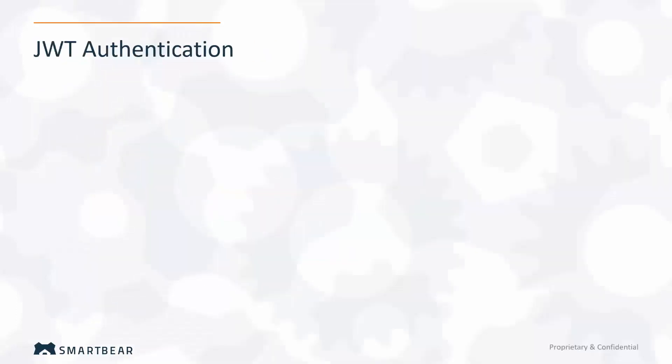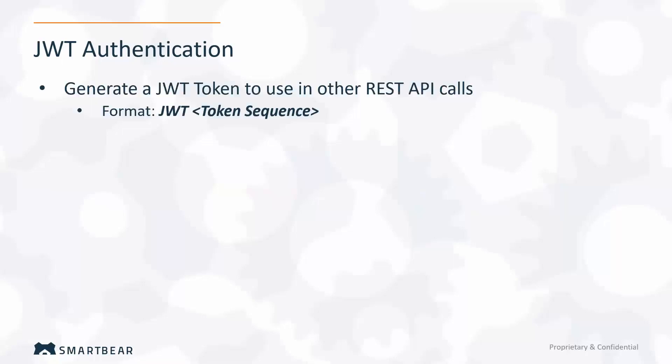The JWT authentication, which is the first step of the workflow, generates a JWT token for the other REST API calls in the workflow and follows the standard JWT token format. It's required for the header and further API calls, so you cannot skip this step — it is part of the post script.